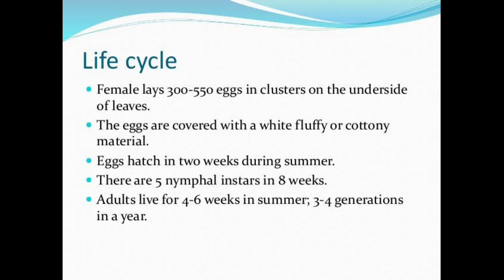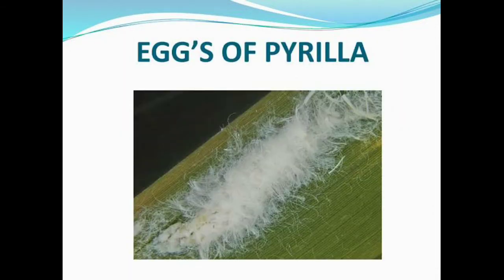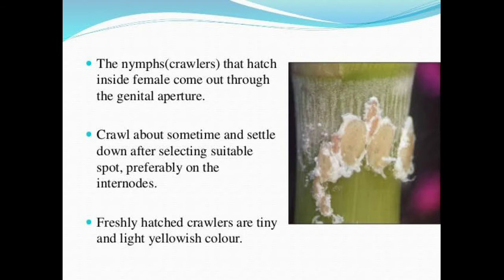It lays eggs outside the leaves. The eggs are covered with white or cottony material to protect them from pests or other parasites. Eggs hatch in about two weeks during summer and there are five nymphal instars. This is the egg of the Pyrilla which is laid on sugarcane. The nymphs that hatch come out and crawl about for some time, then settle down after selecting suitable spots, preferably on the internode. The freshly hatched crawlers are tiny and yellowish in color.